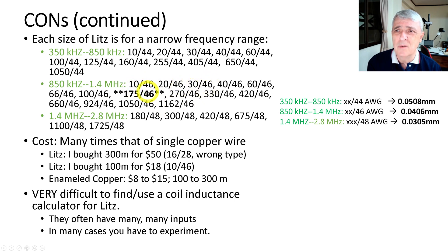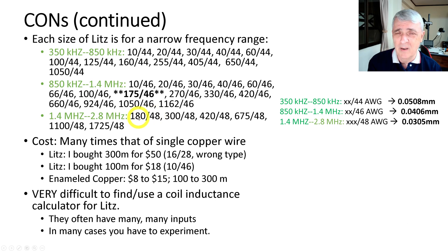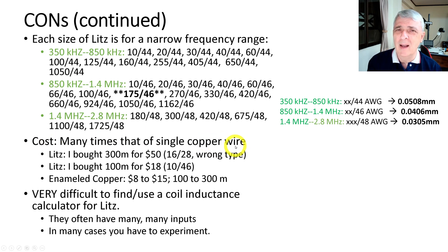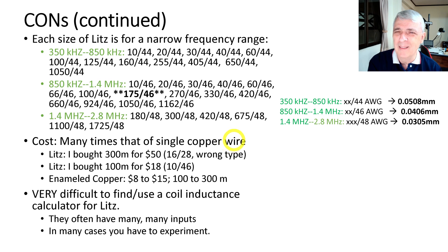To clarify: 46 is the wire gauge and 10 is the number of strands. The most commonly used is 175/46, which is why I keep mentioning it. At the top end, 1.4 to 2.8 megahertz, you have sizes like 180/48 — 48 wire gauge with 180 strands — which to me is almost unworkable for the average person. The cost is many times that of single copper wire. You can get the wrong litz cheaply — this roll was about $25 — but it's the wrong type. A lot of people on the internet don't seem to know that different litz types cover different frequency ranges; they just lump it all together.